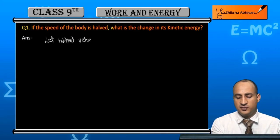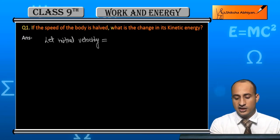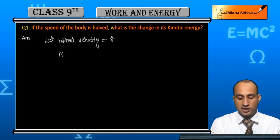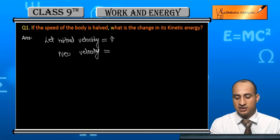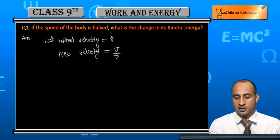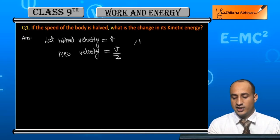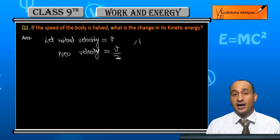The initial velocity is v. The new velocity will be v/2, which is half the original. Now student, let m be the mass.